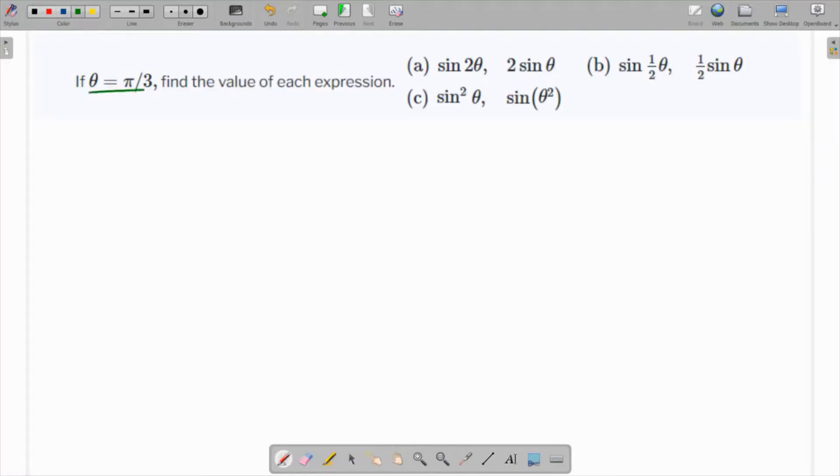In this question theta is π/3 and we need to find the value of each of these expressions. Part a is sine of 2 theta, so that's sine of 2π/3, which is nothing but sine of 120 degrees. We know that this can be written as sine of 180 minus 60, which is nothing but sine of 60 because this is important too, and this is √3/2.